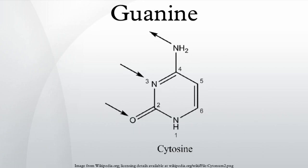Guanine is one of the four main nucleobases found in the nucleic acids DNA and RNA, the others being adenine, cytosine, and thymine. In DNA, guanine is paired with cytosine. With the formula C5H5N5O, guanine is a derivative of purine, consisting of a fused pyrimidine and imidazole ring system with conjugated double bonds. Being unsaturated, the bicyclic molecule is planar. The guanine nucleoside is called guanosine.